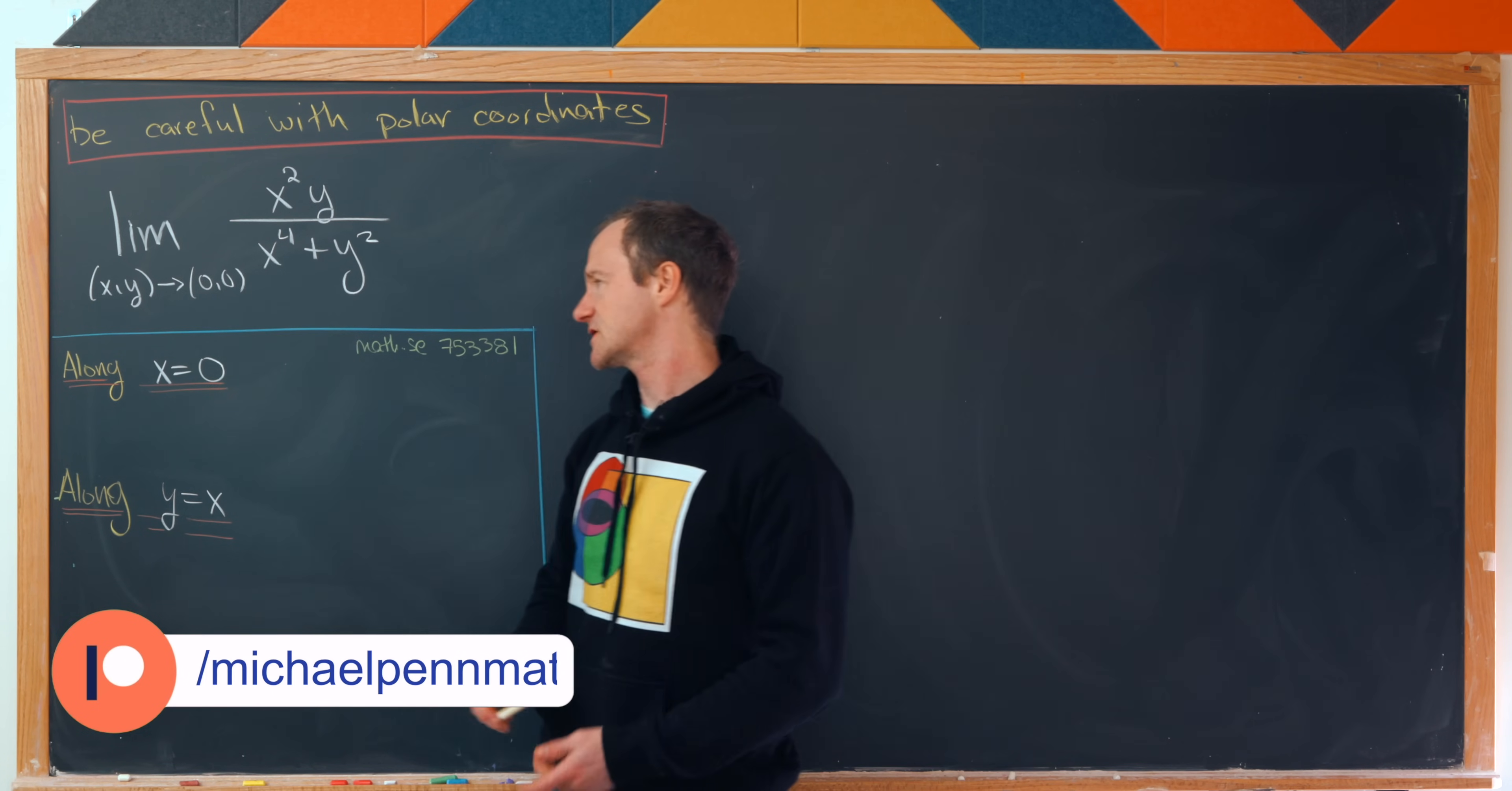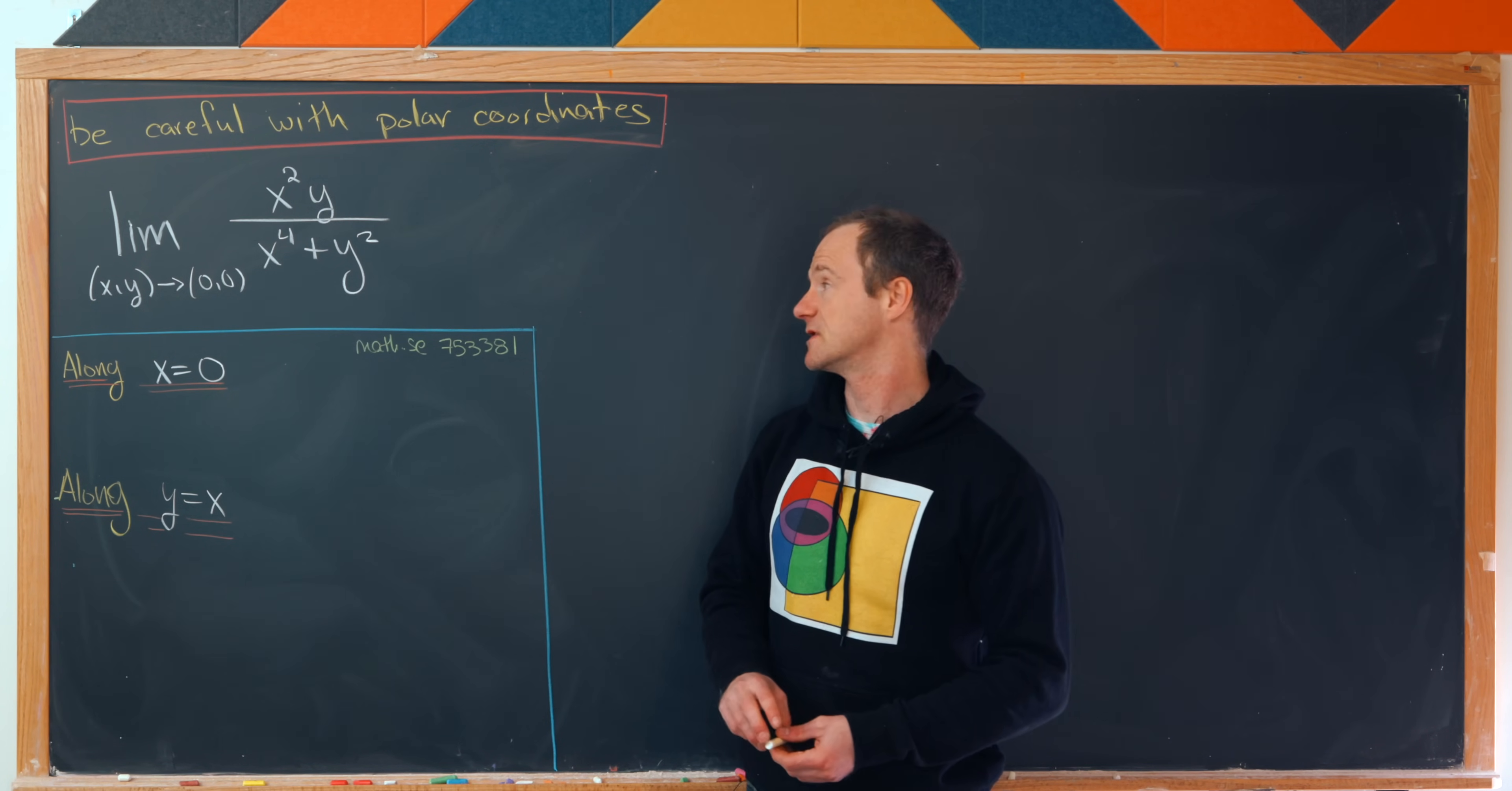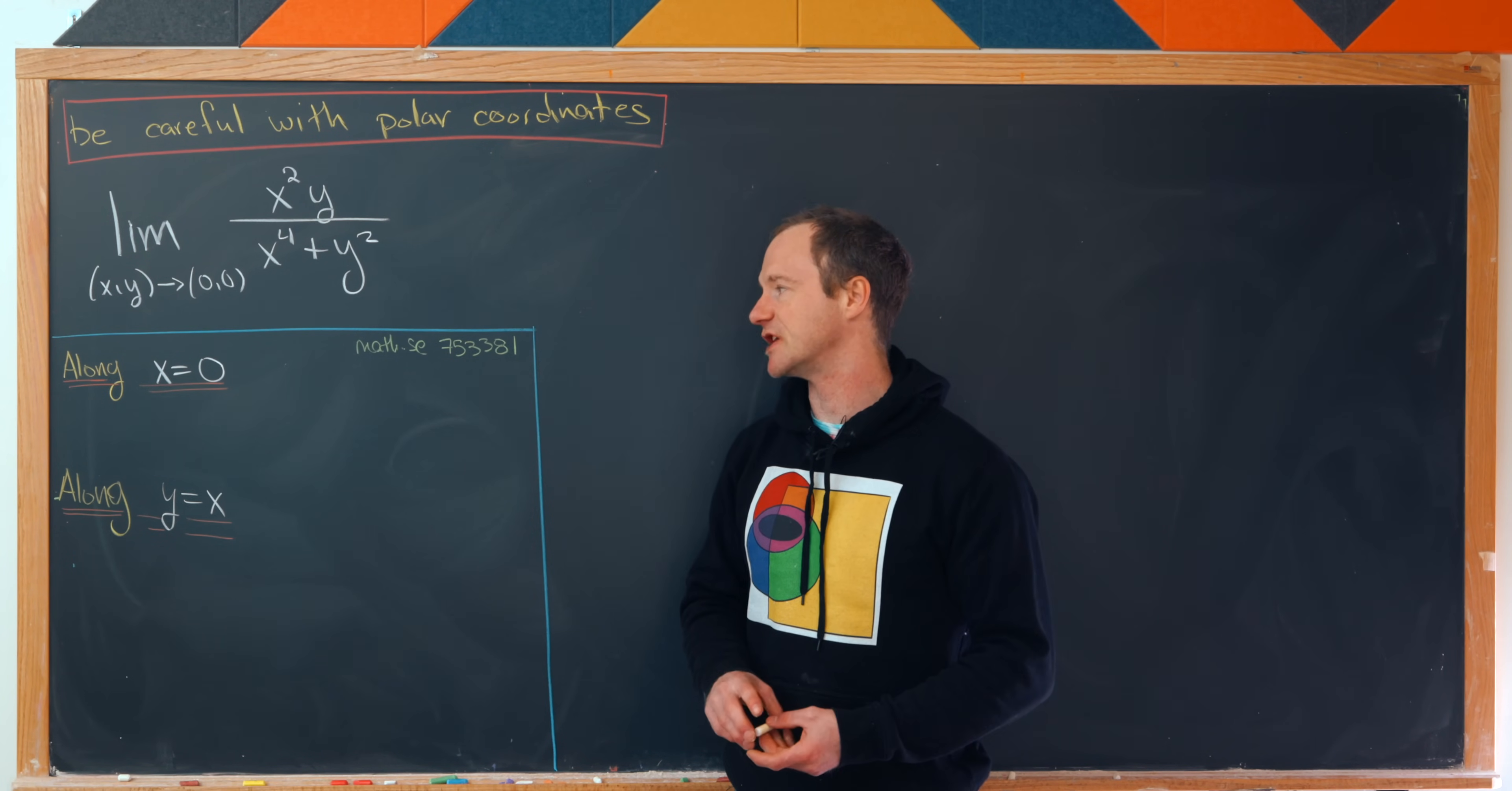We're looking at the limit as (x, y) goes to the origin of x squared y over x to the fourth plus y squared. And this is from the following math.stackexchange post.